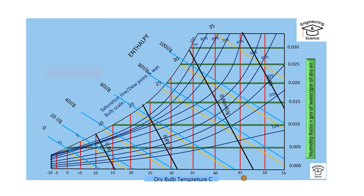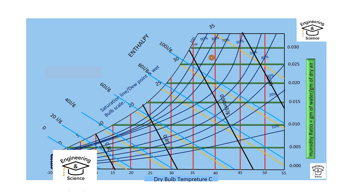Let's see how it represents these parameters. The x-coordinate represents dry bulb temperature, and wet bulb temperature — the orange one represents wet bulb temperature: 0, 5, 10, 20. The dark blue curve represents relative humidity. The y-coordinate represents absolute humidity, or humidity ratio.